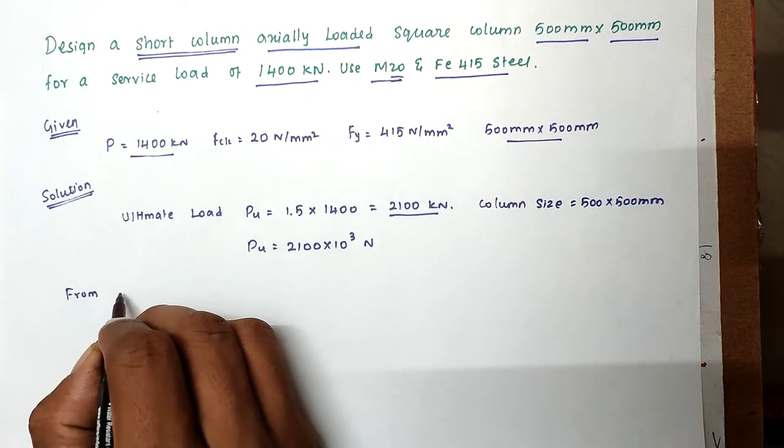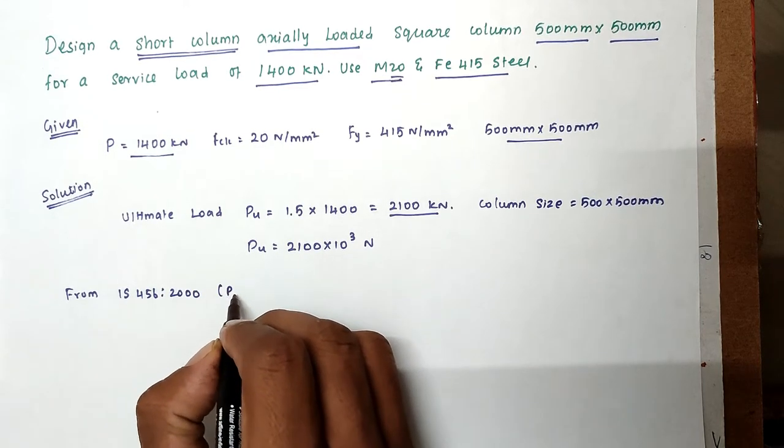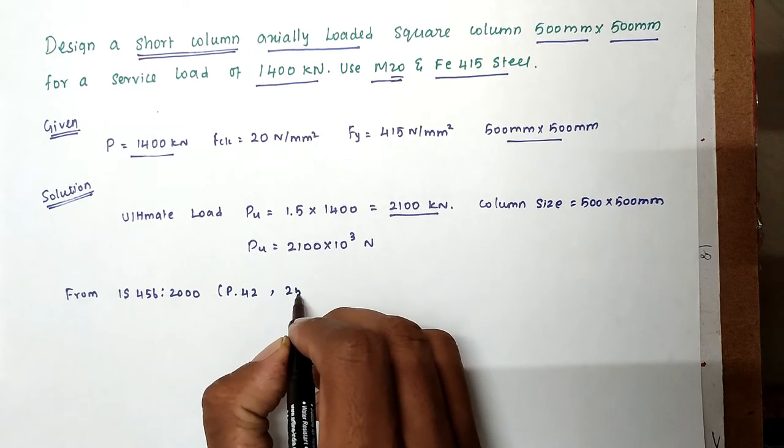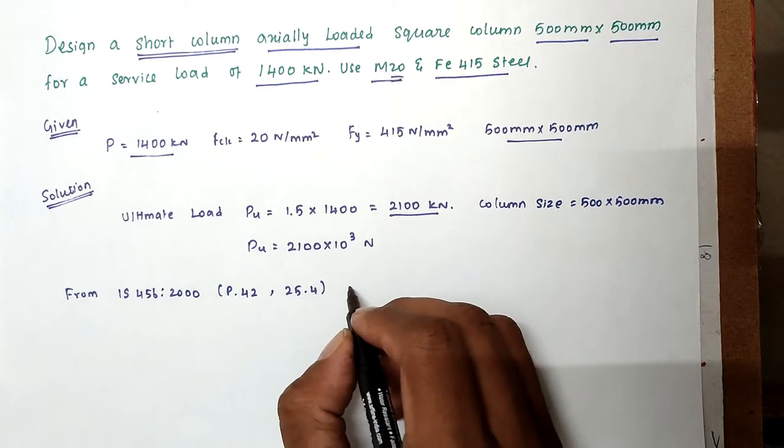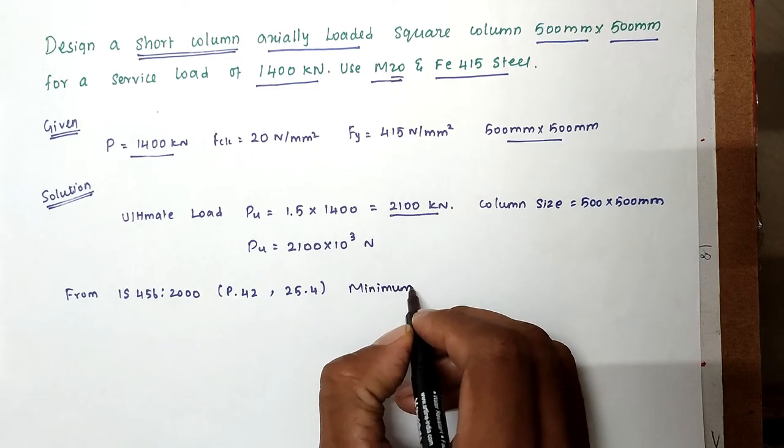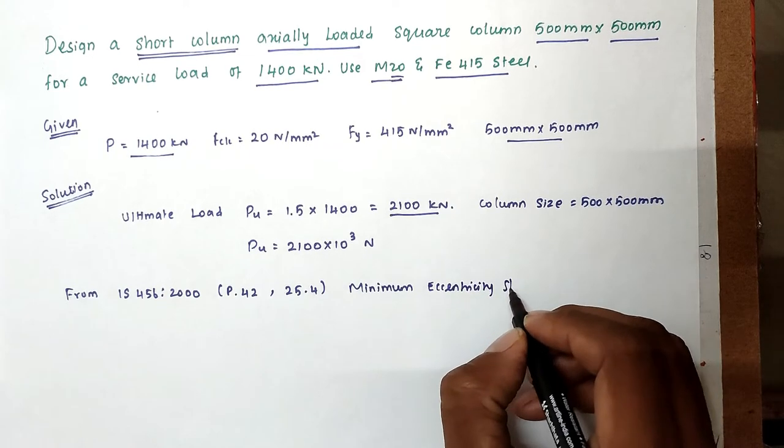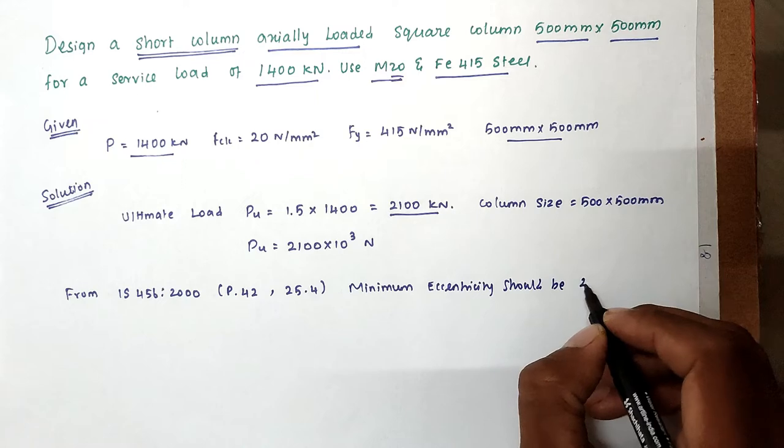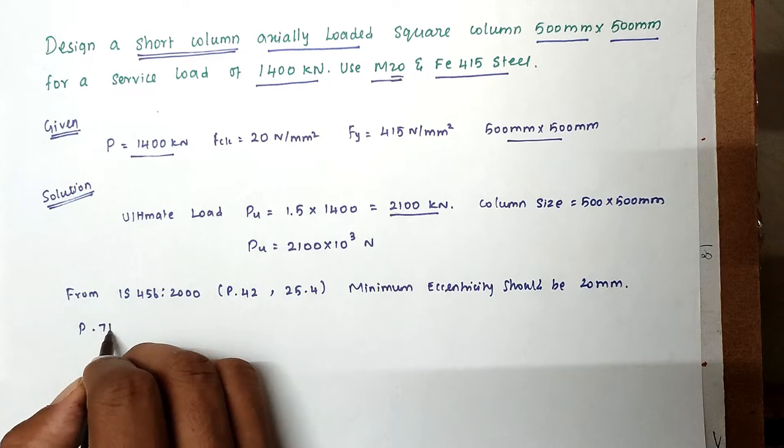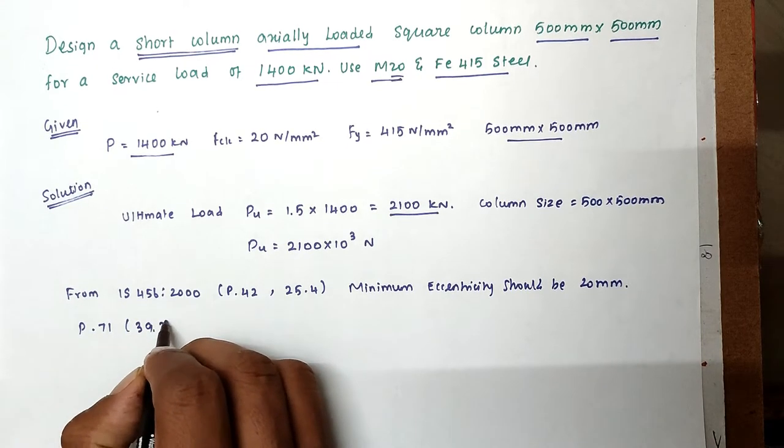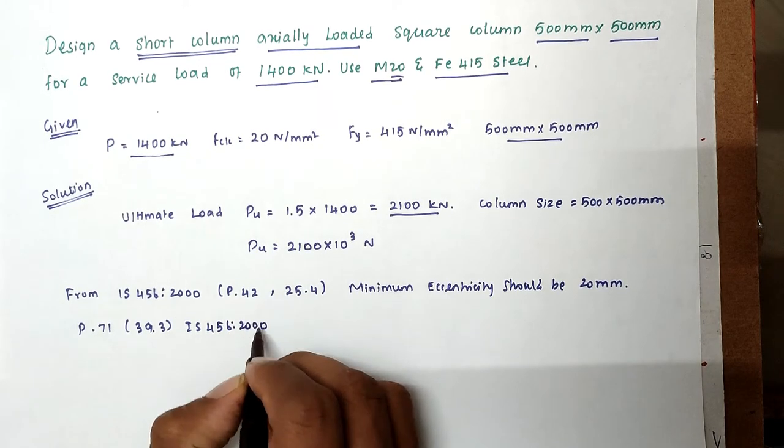So the column size will be 500 into 500mm. So now PU equal to 2100 into 10 power 3 N, 1 kN equal to 1000 N. From IS 456 2000, page number 42, clause number 25.4, the minimum eccentricity should be 20mm.